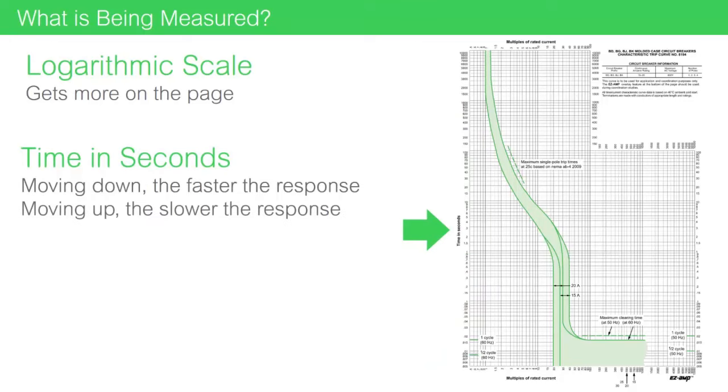Our vertical axis is reporting time in seconds. Moving down, we represent faster responses. Moving up, we represent slower responses.